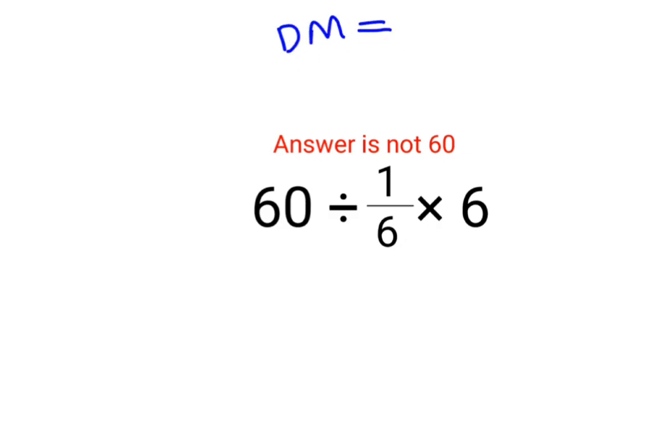So in sums like these, you just have to go from left to right. Whatever operation happens first on your left-hand side has to be done first. So first we'll do 60 ÷ 1/6.